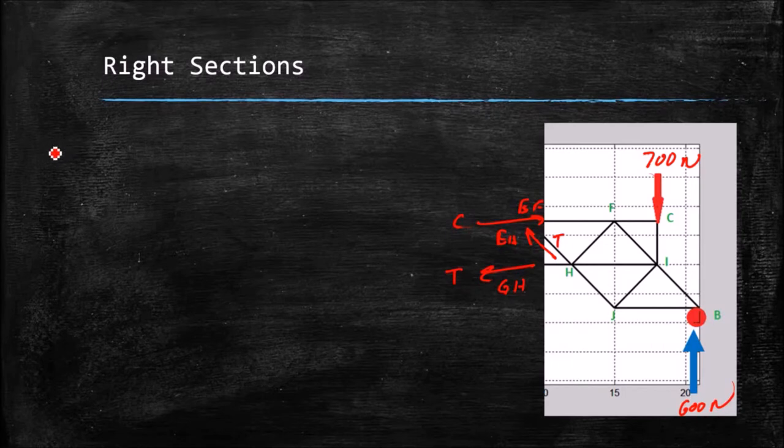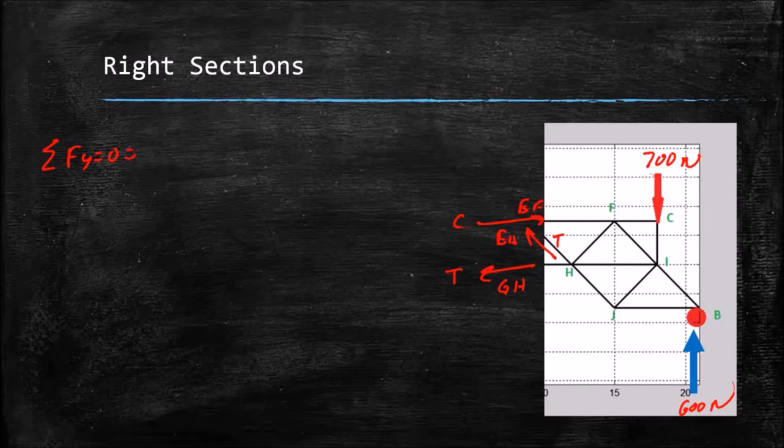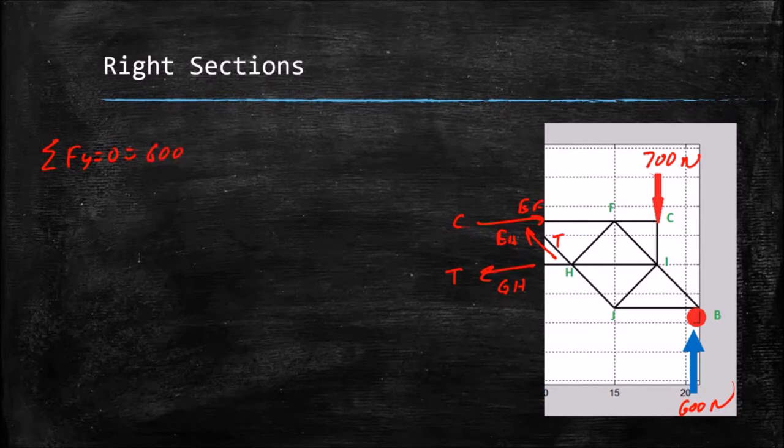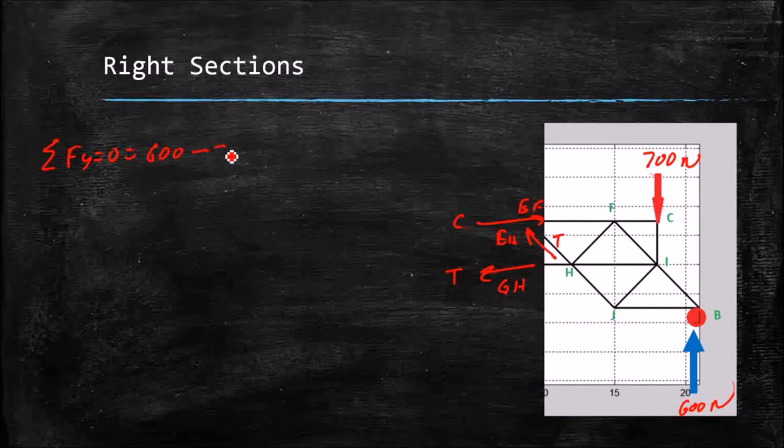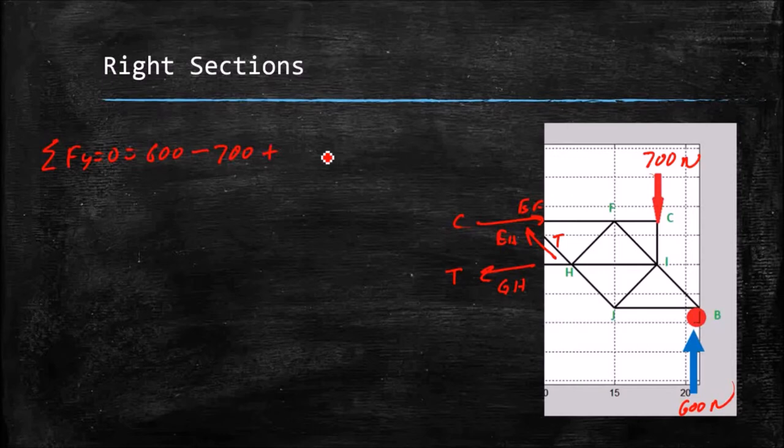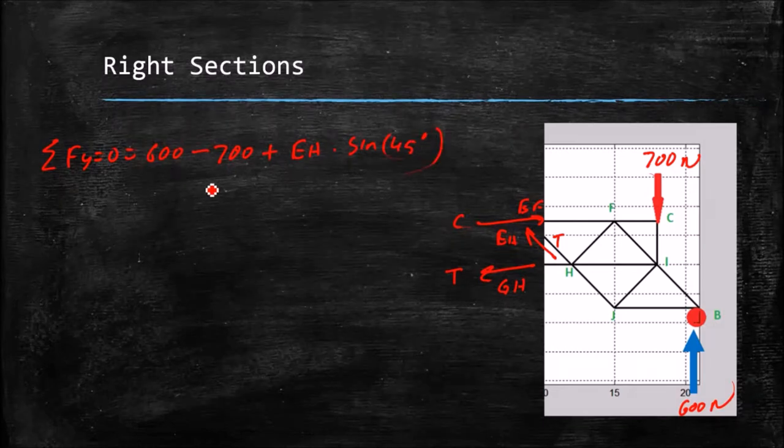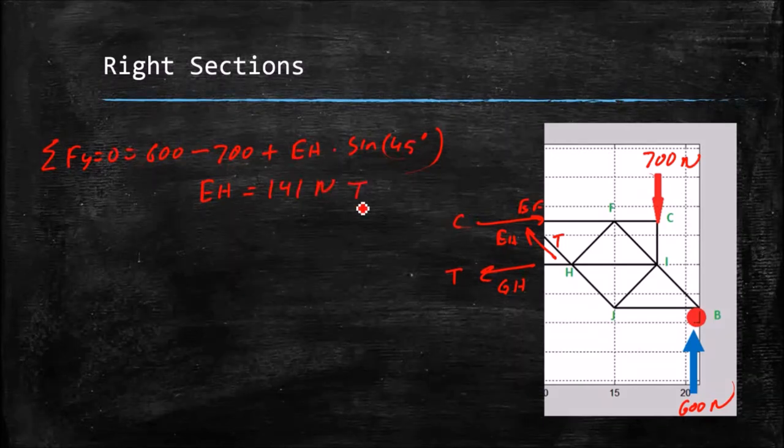And I can do the sum of the forces in the y direction equals zero to keep the whole thing in static equilibrium. So I've got my 600 newton force from the reaction at B. I've got a negative 700 newtons from my applied force. And then I have a plus EH times the sine of 45 degrees. That gives me EH equals 141 newtons in tension, which is the same answer we had on the previous example.